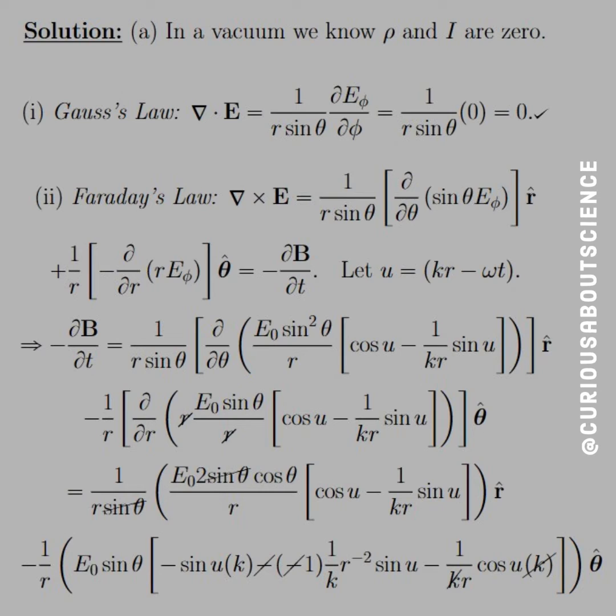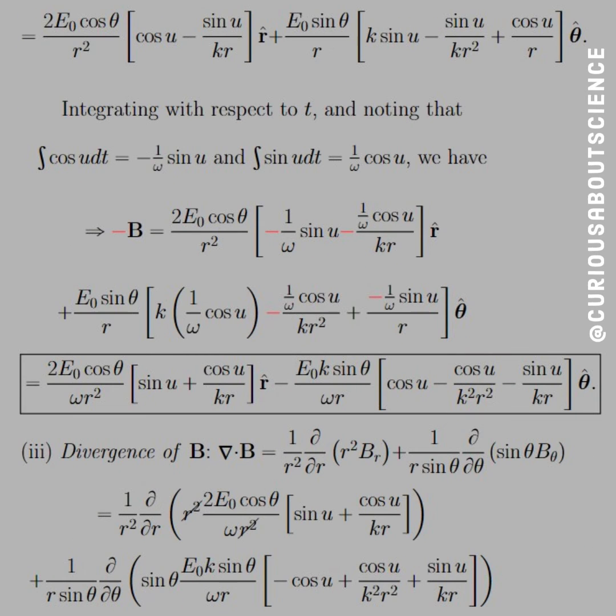Just be very careful with all the negative signs, things of that nature. So it's up to us to clean this up really good. What we see here is that we can clean up the r̂ component pretty quick. We get 2E₀ cos θ / r² [cos u - sin u/(kr)] r̂.